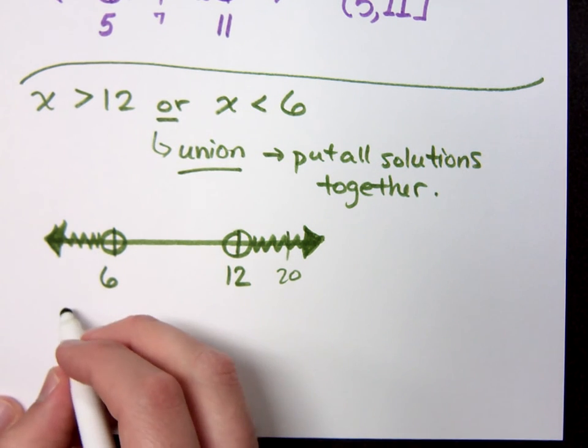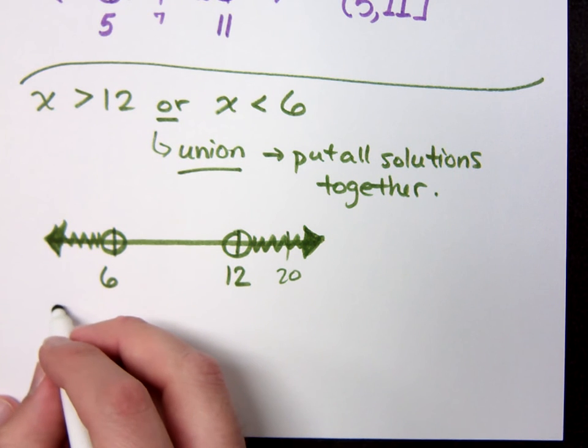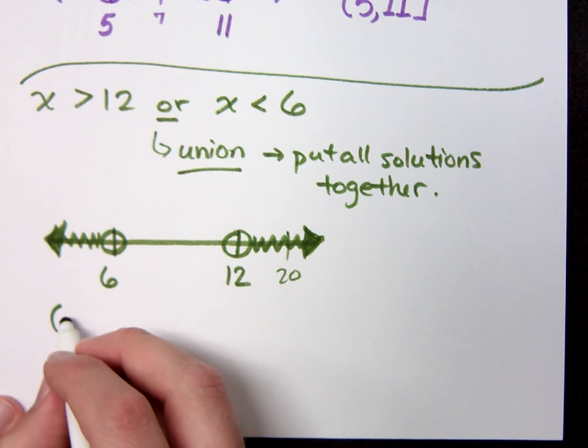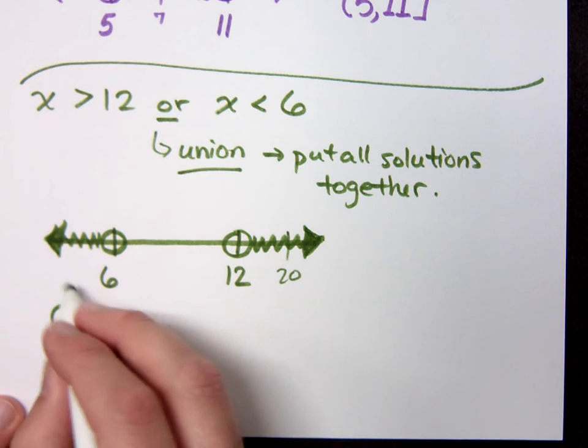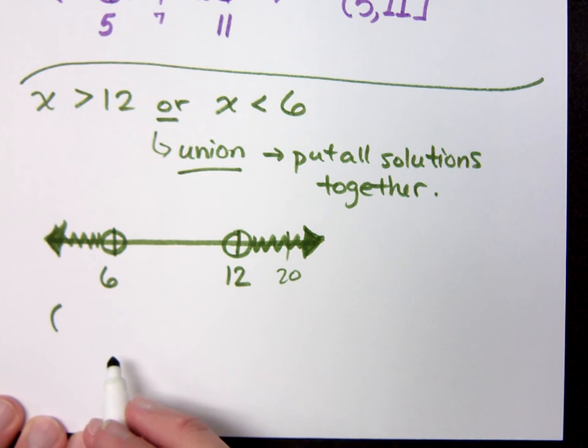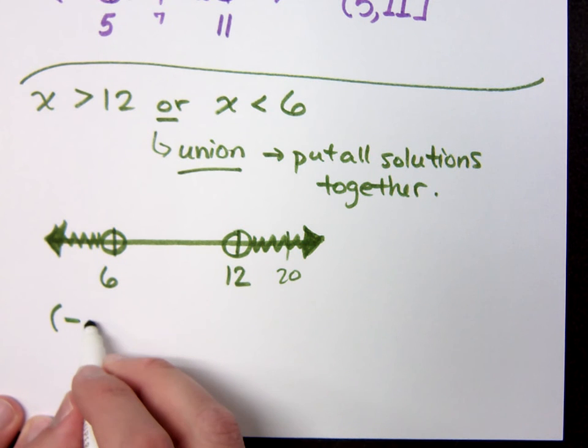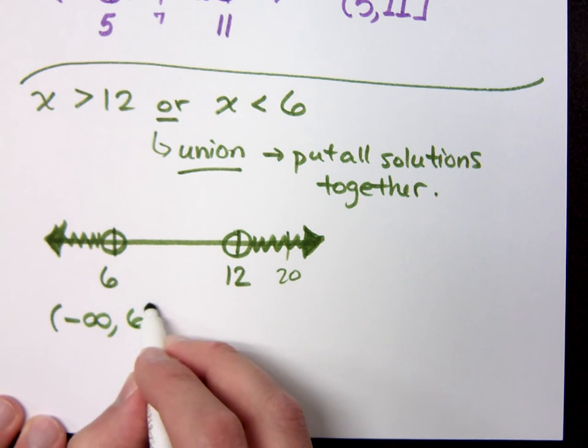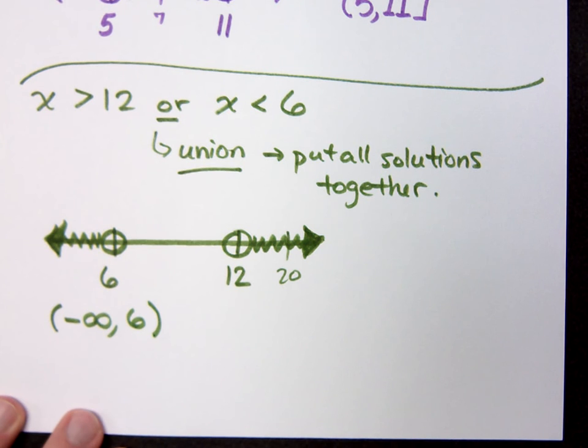Describe what you see here on the left. Using interval notation correctly, the left part would be described using what? Infinity. Negative infinity to 6 parentheses, right?